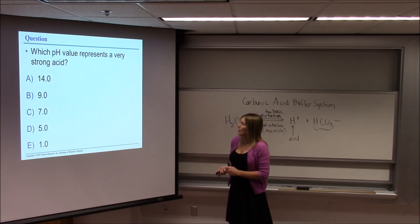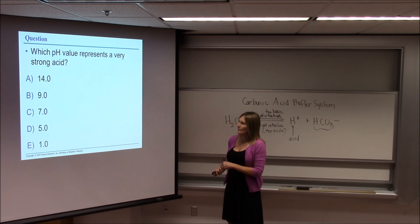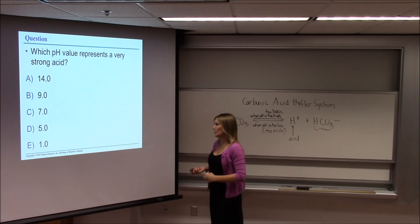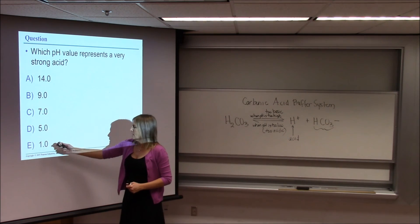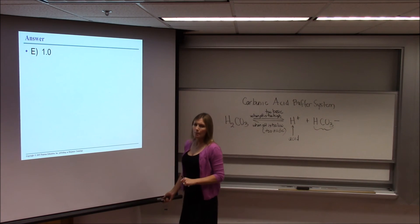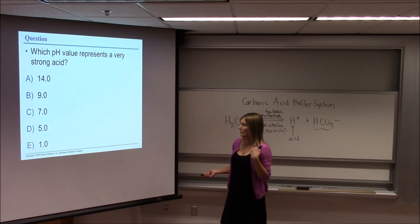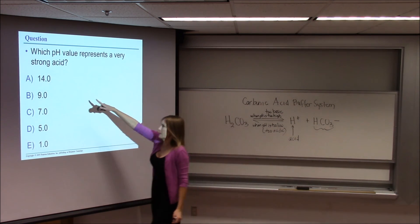So which pH value represents a very strong acid? So remember, higher the number over 7 is basic. Below 7 is an acid. So the lowest number you could get would be the strongest acid. So the correct answer is 1. 1.0 would be the strongest acid of those listed. 14.0 would be the strongest base.